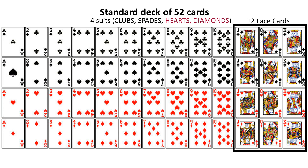There are 12 so-called face cards, and if you look at those cards, they actually have faces on them — that's why they're called face cards. The J stands for jack, so there are 4 jacks. The Q stands for queen, so there are 4 queens. And the K stands for king, and there are 4 kings. So the 12 face cards are the 4 jacks, the 4 queens, and the 4 kings. So when someone refers to face cards, those are the 12 cards they are referring to.